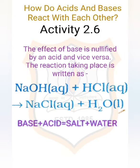Next, how do acids and bases react with each other? Let us have Activity 2.6. Take about 2 ml of dilute sodium hydroxide (NaOH) solution in a test tube and add 2 drops of phenolphthalein solution to it. The color of the solution will be pink. Now add dilute HCl (hydrochloric acid) solution to the above solution drop by drop.